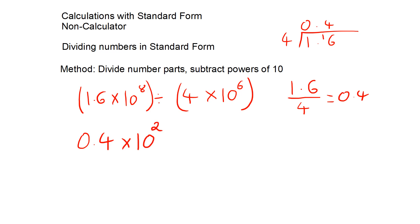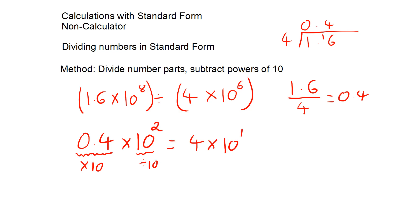But this is not standard form. In order to make this standard form, the 0.4 would need to be between 1 and 10. So I need to multiply the 0.4 by 10, and to balance it I divide the 10 to the 2 by 10, which gives me 4 times 10 to the power of 1.